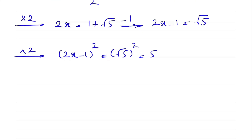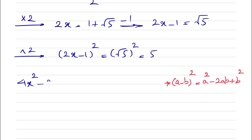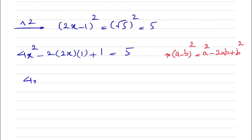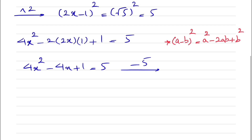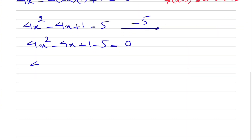We use the identity (a − b)² = a² − 2ab + b². On the left side we get 4x² − 2·(2x)·1 + 1² = 5, which simplifies to 4x² − 4x + 1 = 5. Subtracting 5 from each side gives us 4x² − 4x − 4 = 0.